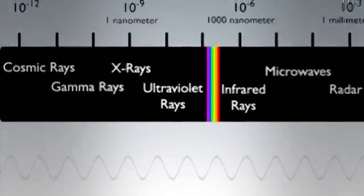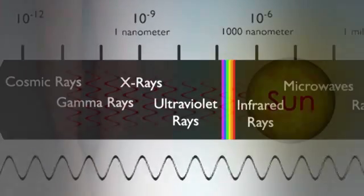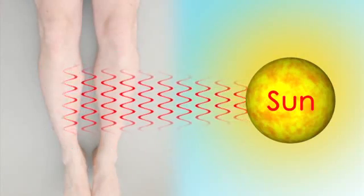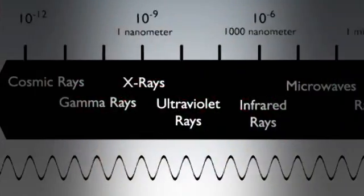From visible violet light, we move into ultraviolet frequencies. Human skin produces vitamin D when exposed to ultraviolet light, but excessive ultraviolet light causes sunburns.